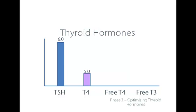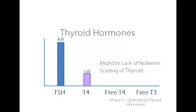Another scenario: high TSH above the optimal of 2 and still low levels of T4. This is an example of the pituitary responding to low T4 levels by increasing TSH, possibly also because of its response to extra iodide. Again, this may be due to a lack of nutrients, scarring of the thyroid, or it may just need more time — perhaps two weeks on the 3 mg dose is not enough. It may also indicate enough damage that the person does need to stay on their prescription.